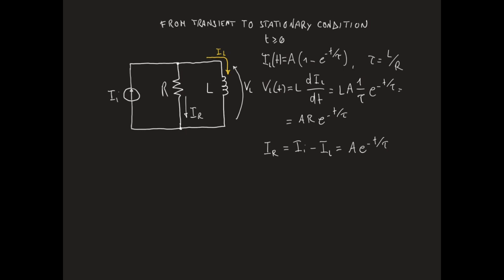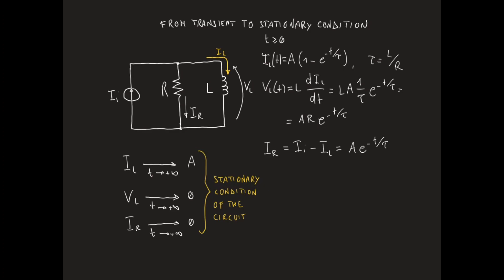As time increases, IL gets closer and closer to the asymptotic value A, corresponding to the amplitude of the input step signal. On the other hand, both VL and IR tend to zero as t goes to infinity. These three final values for IL, VL, and IR represent the stationary condition of the circuit — the condition the circuit tends to if we wait enough time.